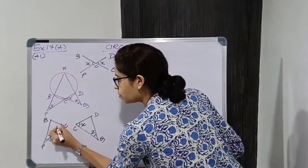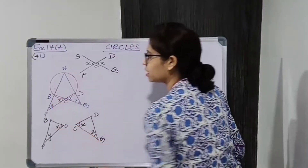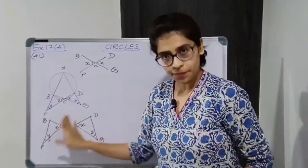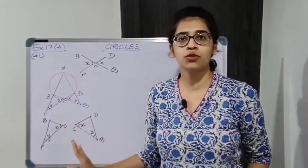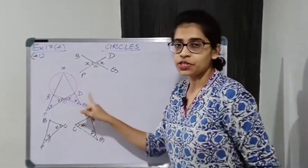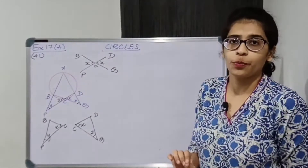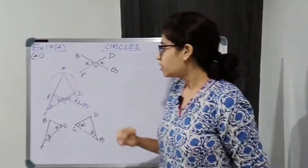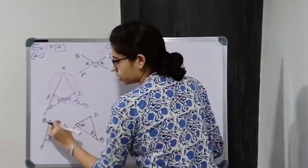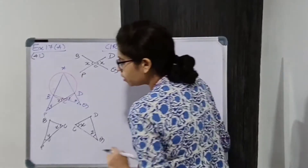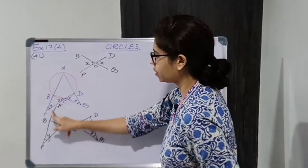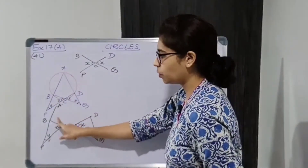Since DCQ = x, angle BCP is also equal to x. Now consider triangle BPC. If we extend the sides, they meet at point A. So angle CBA (i.e., ABC) is the exterior angle of triangle BPC. Similarly, angle ADC is the exterior angle of triangle DCQ.